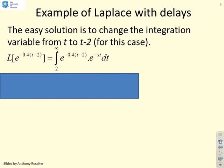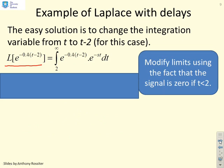So here's a very specific example. I want to find the Laplace of e^(-0.4(t-2)), where I've assumed that the signal is 0 if t is less than 2. And therefore, here's the key point. You notice I've changed this integration limit to be 2, because I know that the signal is 0 for less than 2. So there's no point integrating from 0 to infinity. I might as well do it from 2 to infinity. But otherwise, you'll see this is the standard definition for a Laplace transform. So the integral here between 2 and infinity, and then I've got the signal f(t)*e^(-st) dt.